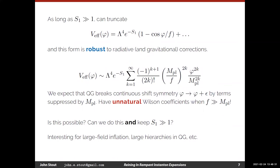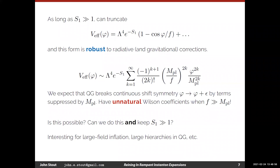In the context of the strong CP problem, the fact that quantum gravity terms can mess up the instanton-generated potential is phrased as a quality problem. But the goal here seems different — you want to engineer things such that the Planck-suppressed terms are suppressed just because f is much larger than M_Planck. Then you rely on the instanton-based computation — so what's the last part of the logic?